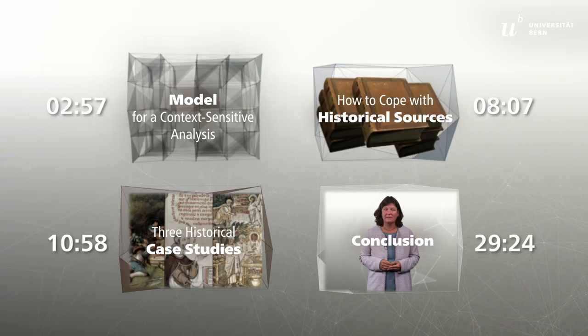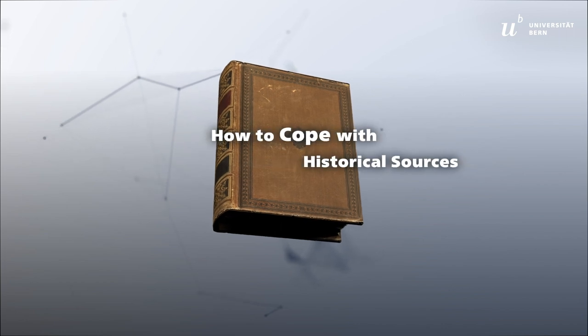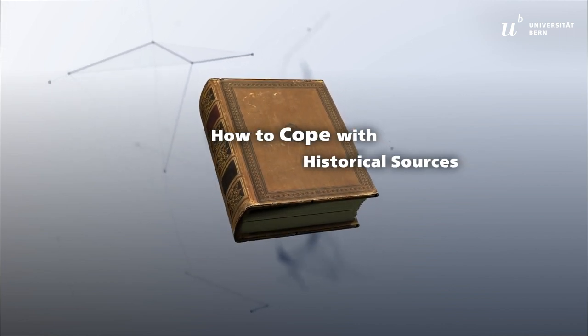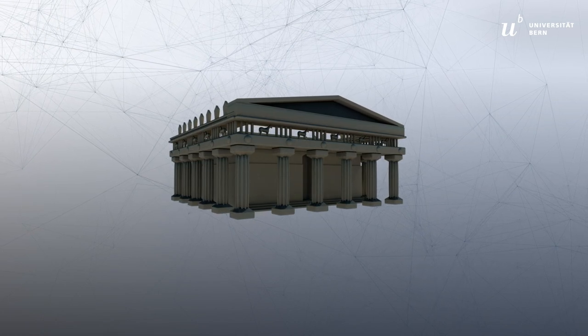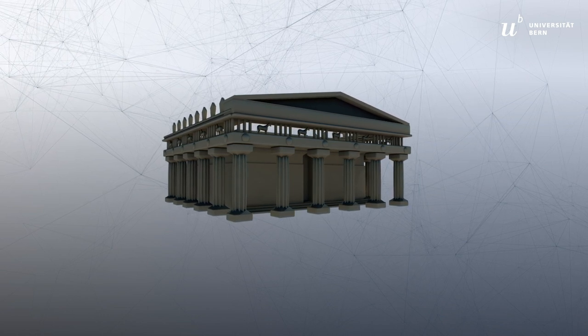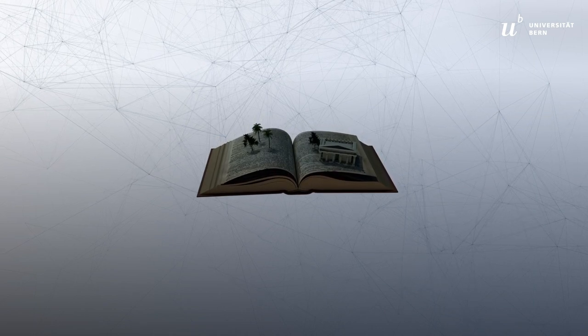Before we begin with the historical case studies, we explain how historians cope with historical sources. Our view of the past will always be through the lens of the present. This is legitimate and inevitable, of course. However, we must bear in mind that historical sources cannot answer all of our present-day questions. History remains an attempt to reconstruct aspects of the past, which means that we have no access to the past in its entirety. When using and making reference to historical sources, we need to pay attention to various methodological issues.